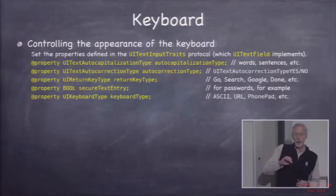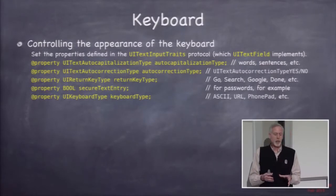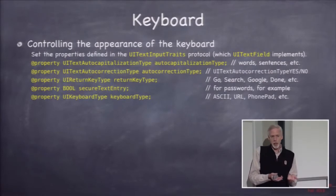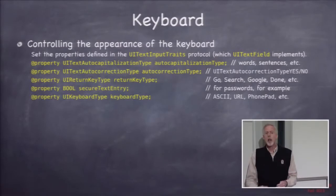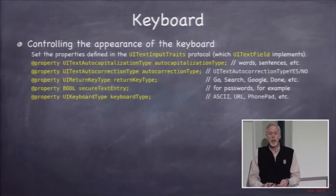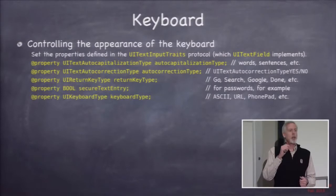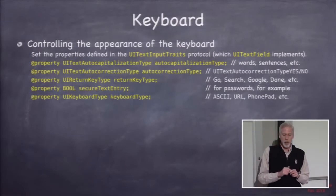There's no property to get the keyboard object directly and set properties on it. When you want to control the keyboard's appearance, you send messages to the UITextField or UITextView class that brings the keyboard up. Those classes implement a protocol called UITextInputTraits — a set of properties you set on a text field or text view that actually control the keyboard they bring up. Properties include auto capitalization, so for example the first character or every new word can be automatically capitalized.